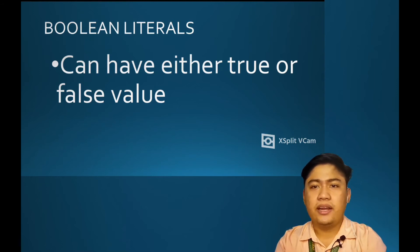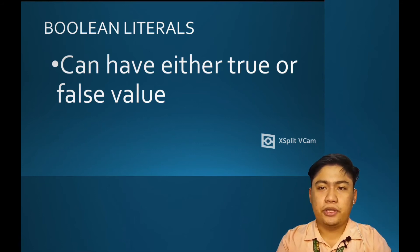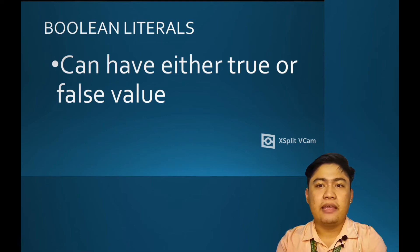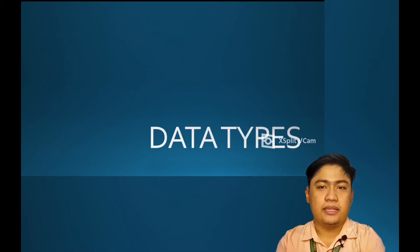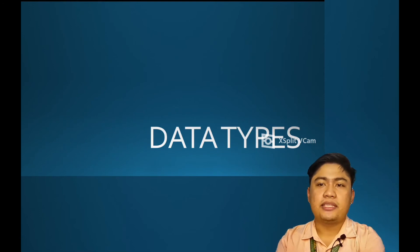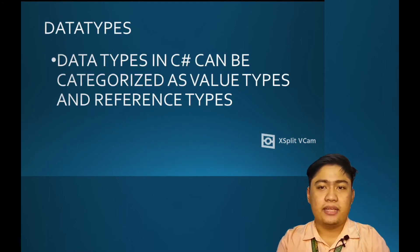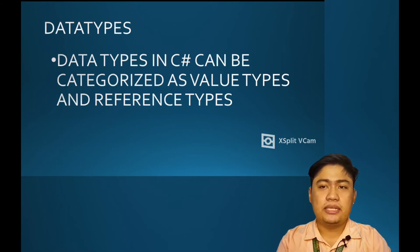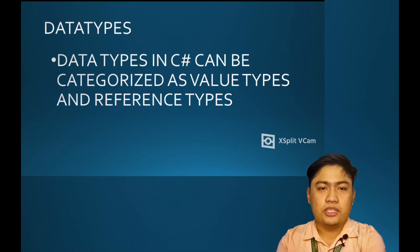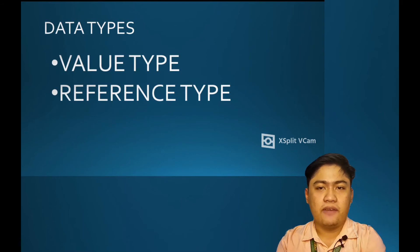Variables are allocated in the computer's memory. A variable should be identified based on the type of data it can hold. The data types in C-Sharp can be categorized as value type and reference type. The only difference between the two categories is how they are presented in the memory.